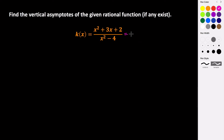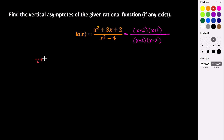The numerator is going to factor to be x plus 2 times the quantity x plus 1, and the denominator factors to be x plus 2 times the quantity x minus 2. We know that we have domain restrictions — x plus 2 cannot equal 0 and x minus 2 cannot equal 0. But we can see that x plus 2 and x plus 2 cancel. When we have a factor that actually cancels, it still is included as part of the domain restrictions.